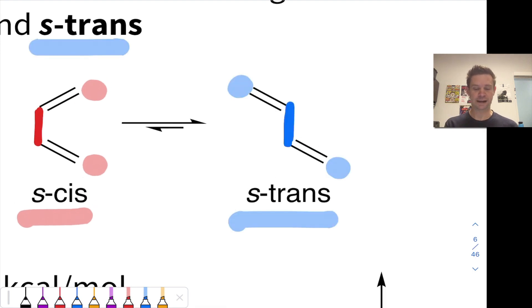In the S-trans conformer, if I again highlight the central C-C single bond in blue, the two CH2 groups are on opposite sides of that single bond. So this is known as S-trans.